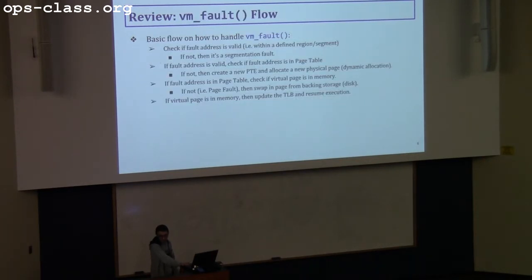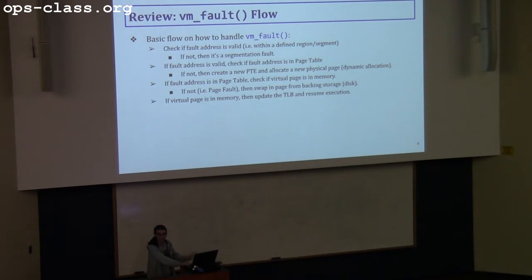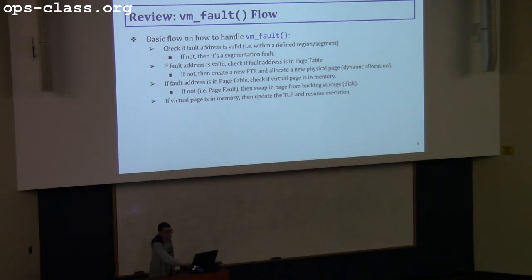We mentioned the VM fault flow: whenever a VM fault happens, that means a TLB fault did happen already. What you need to do is check the fault address to see if it is valid and falls within the defined region. If valid, check if you have an entry for that address in the page table. If not, create one virtually and physically. If you have an entry, check if the virtual page is in memory and not on disk. If it's in memory, update the TLB.